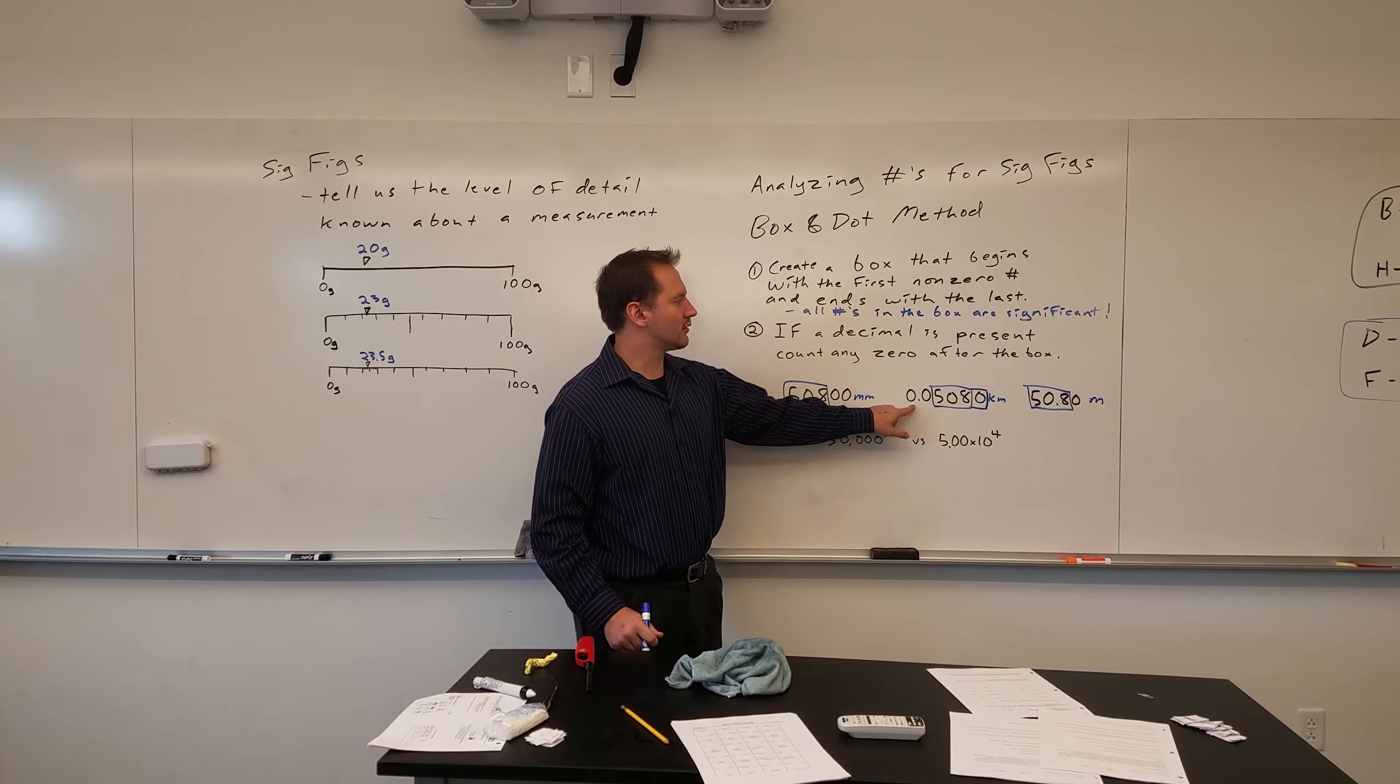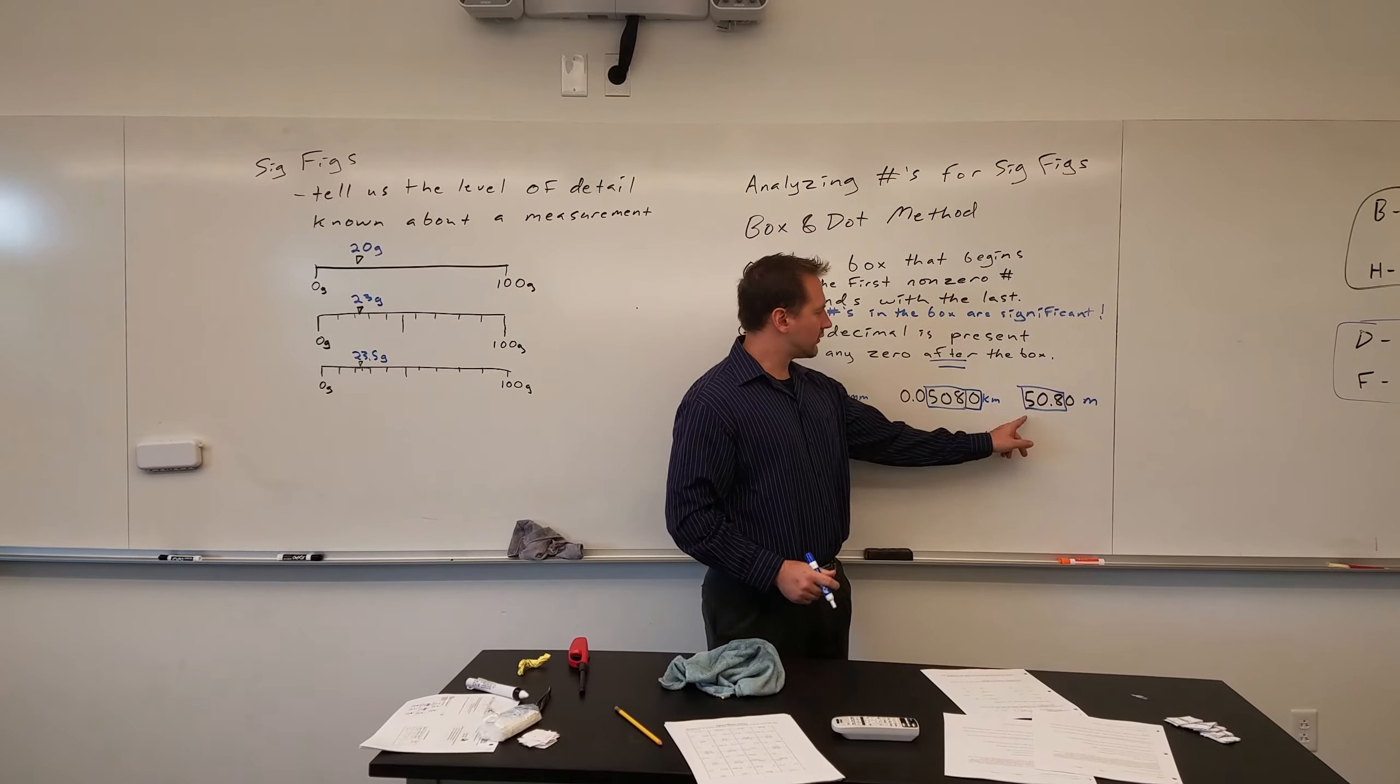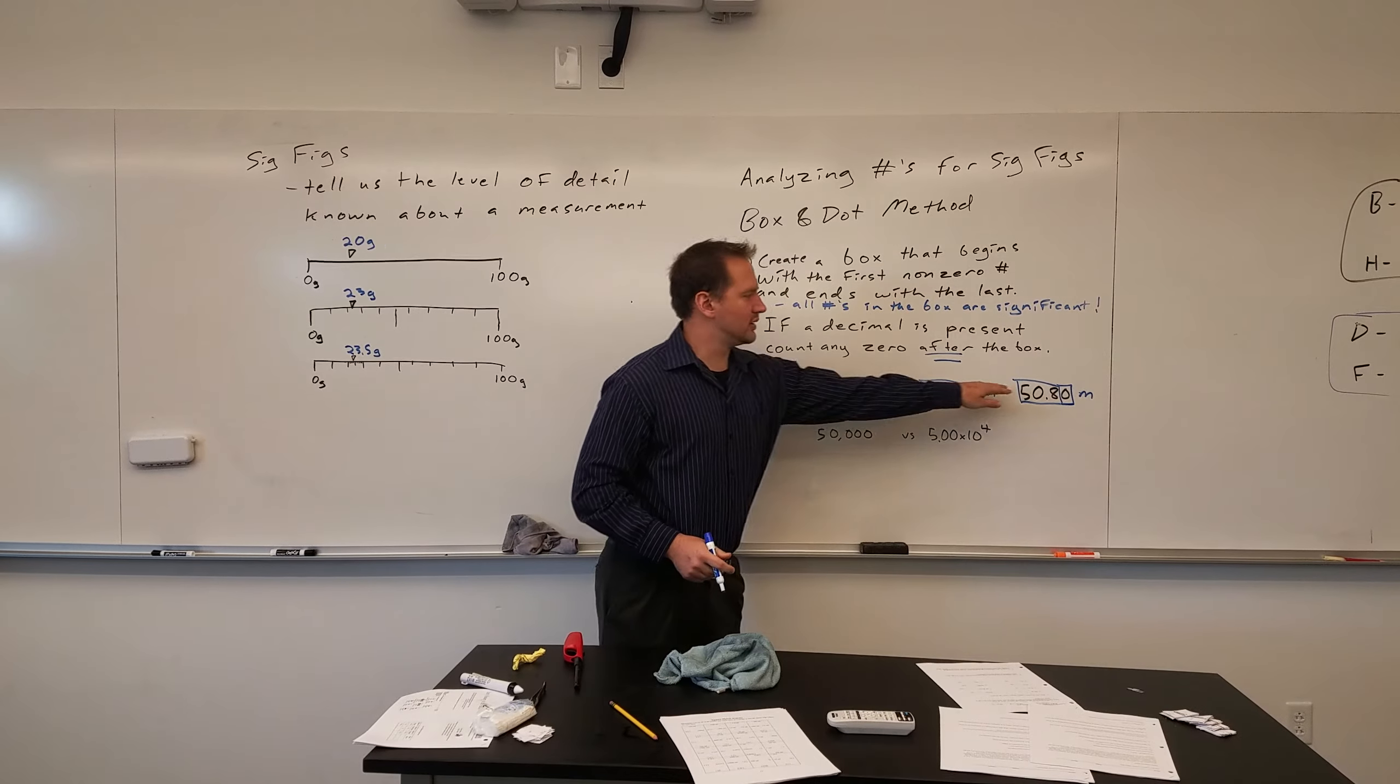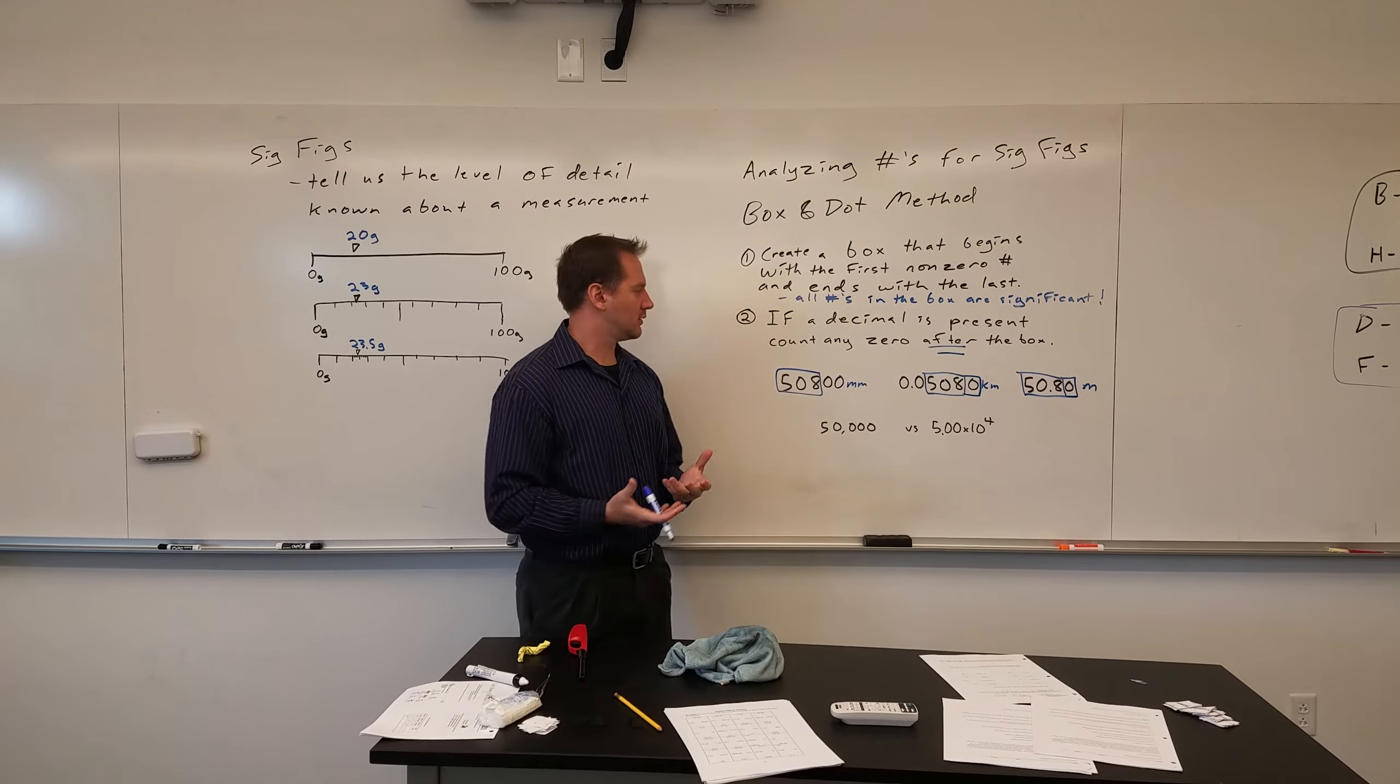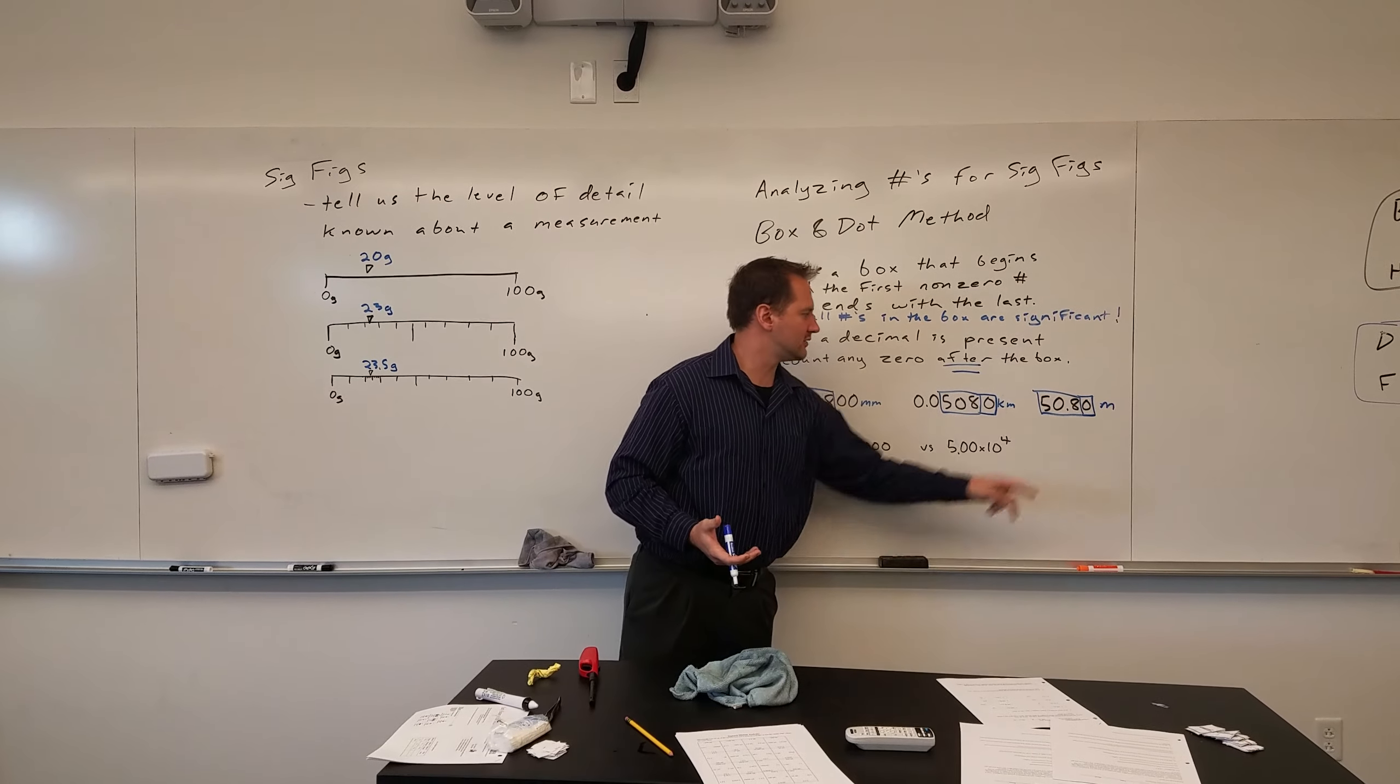We don't count these zeros in front because they're not after the box, which is what they would need to do to count. Then if we look at this last one, there's a decimal, zero after the box, counting. So we can see that with these two measurements, we know four significant figures. Now these could actually all be the same exact object because these numbers are all equivalent. This is in millimeters, this is in kilometers, and that's in meters.